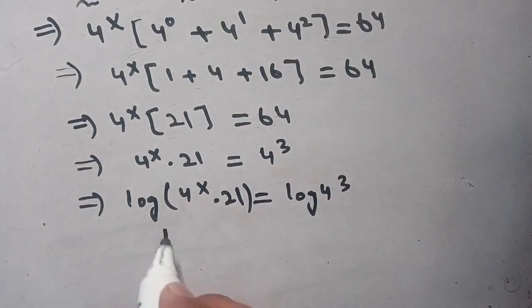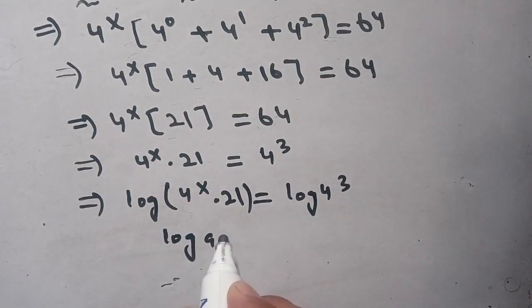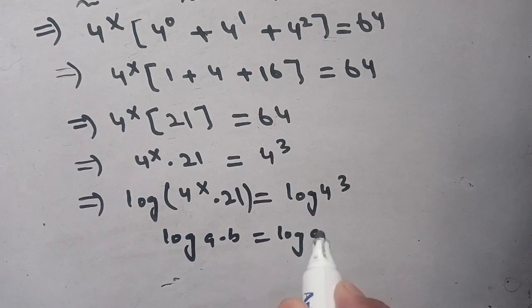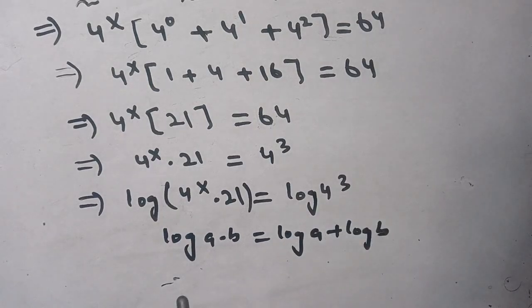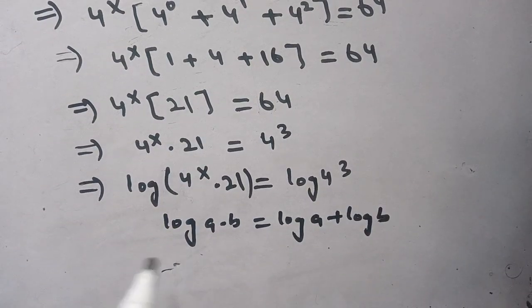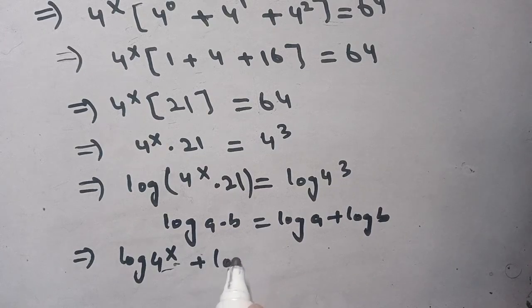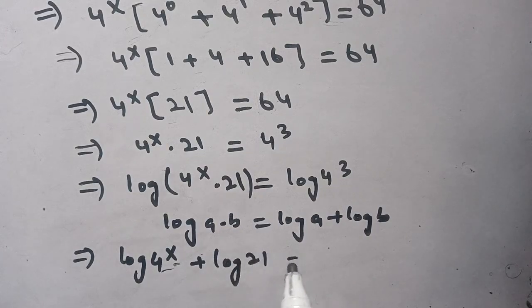We know that log(a times b) equals log(a) plus log(b). We use this identity to get log(4^x) plus log(21) equals log(4^3).